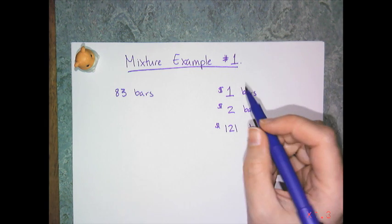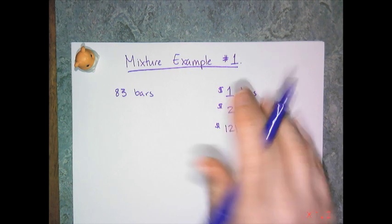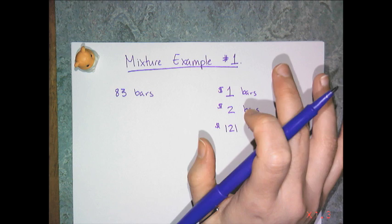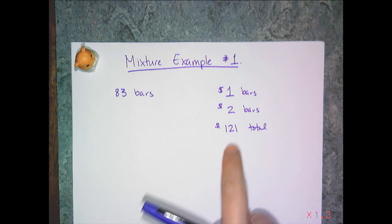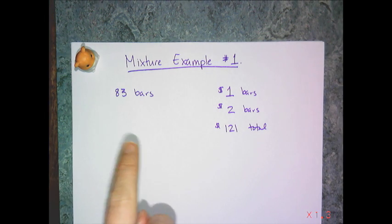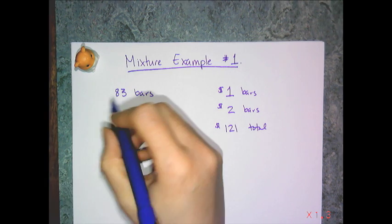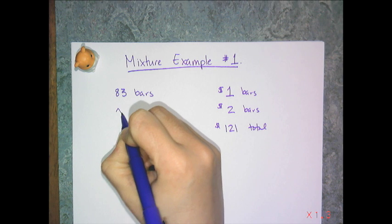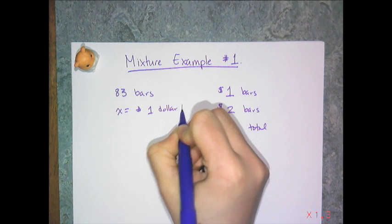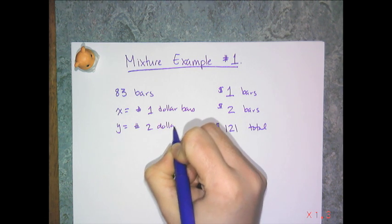As I said in the slide, mixture problems have one or two or more different types of things, and two or more attributes. So, the attributes in this case are money and total number. Now, I have to figure out how many bars were $1 and how many bars were $2 of this $121 total, and so that's what I'm going to make my variables. x is equal to the number of $1 bars, and then y is equal to the number of $2 bars.